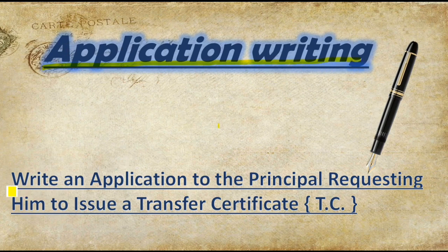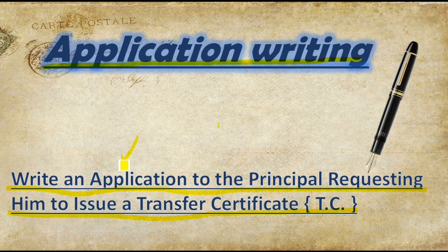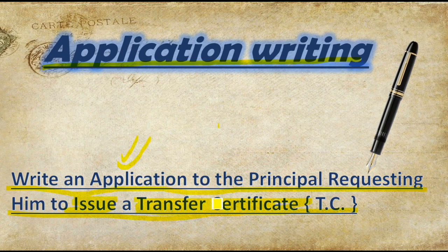Today's topic of the application writing is: write an application to the principal requesting him to issue a transfer certificate (TC). यानि एक application principal को लिखना और उनसे request करना कि वो issue करें एक transfer certificate — हम school छोड़ रहे हैं और किसी दूसरे school में admission लेना चाहते हैं, जिसके लिए transfer certificate चाहिए होता है जिसे TC कहते हैं। तो आइए, कैसे यह application लिखते हैं, सीखते हैं।